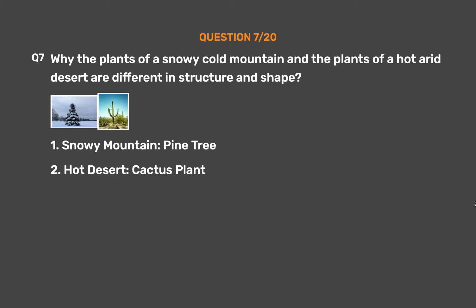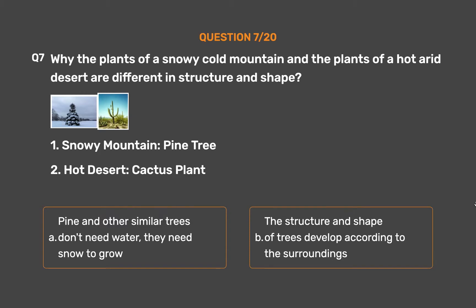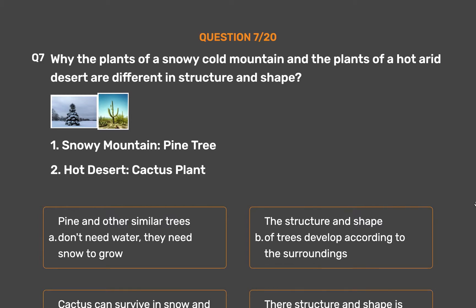Question 7. Why are the plants of a snowy cold mountain and the plants of a hot arid desert different in structure and shape? Examples: snowy mountain — pine tree; hot desert — cactus plant. Option A: Pine and other similar trees don't need water; they need snow to grow. Option B: The structure and shape of trees develop according to the surroundings. Option C: Cactus can survive in snow and pine can survive in desert. Option D: Their structure and shape is not different.